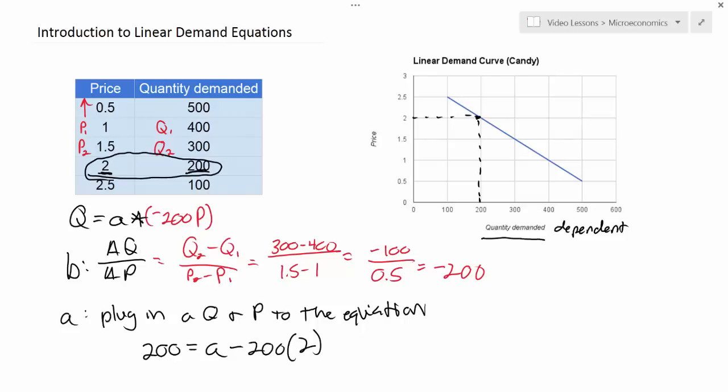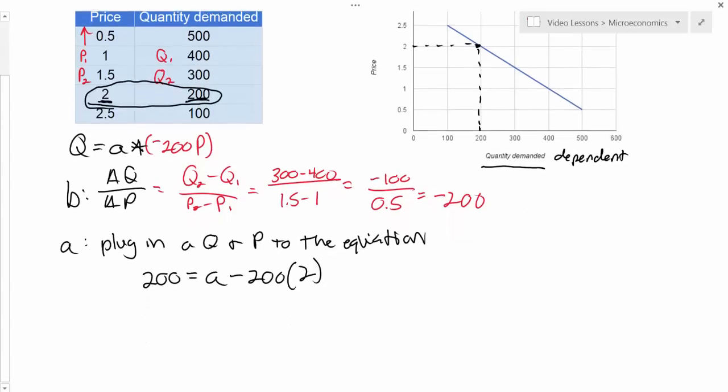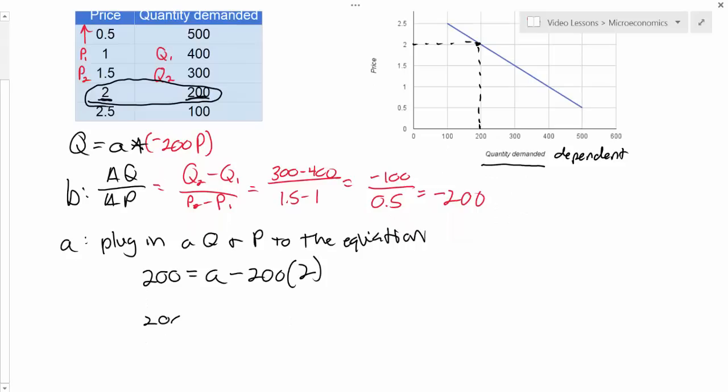And I can solve for a by completing the equation here. So let's do that. Let's move down a little bit. I know that 200 equals a minus 200 times 2, which is 400. To solve for a, I move the 400 over here, and I get 600 equals a. There's my a variable.